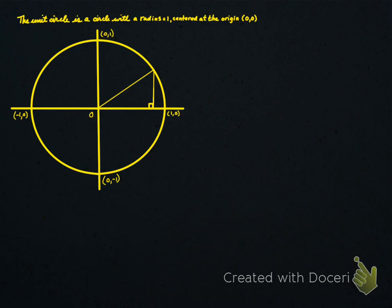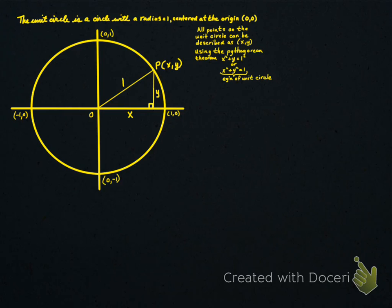Now if we look at any point on the circle, we have a right angle triangle. The distance along the x-axis is x, the distance along the y-axis is y, and the point is going to be (x, y). The radius is equal to 1, so all points on the unit circle can be described as the ordered pair (x, y). Using the Pythagorean theorem, x² + y² = 1 is the equation of our unit circle.